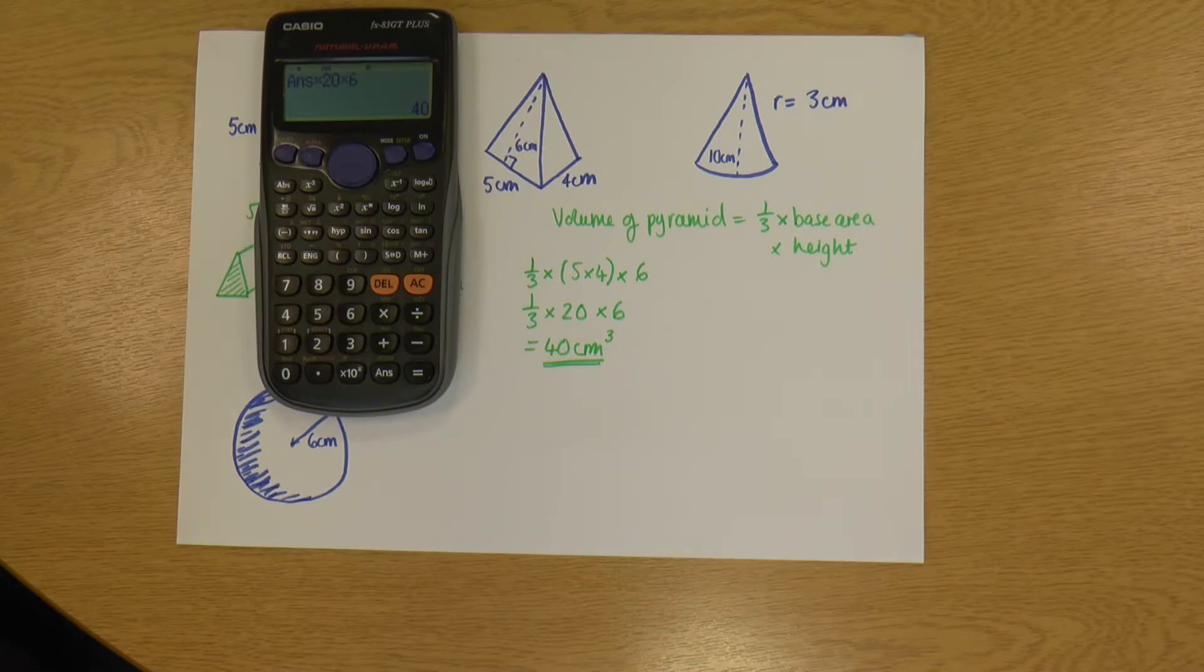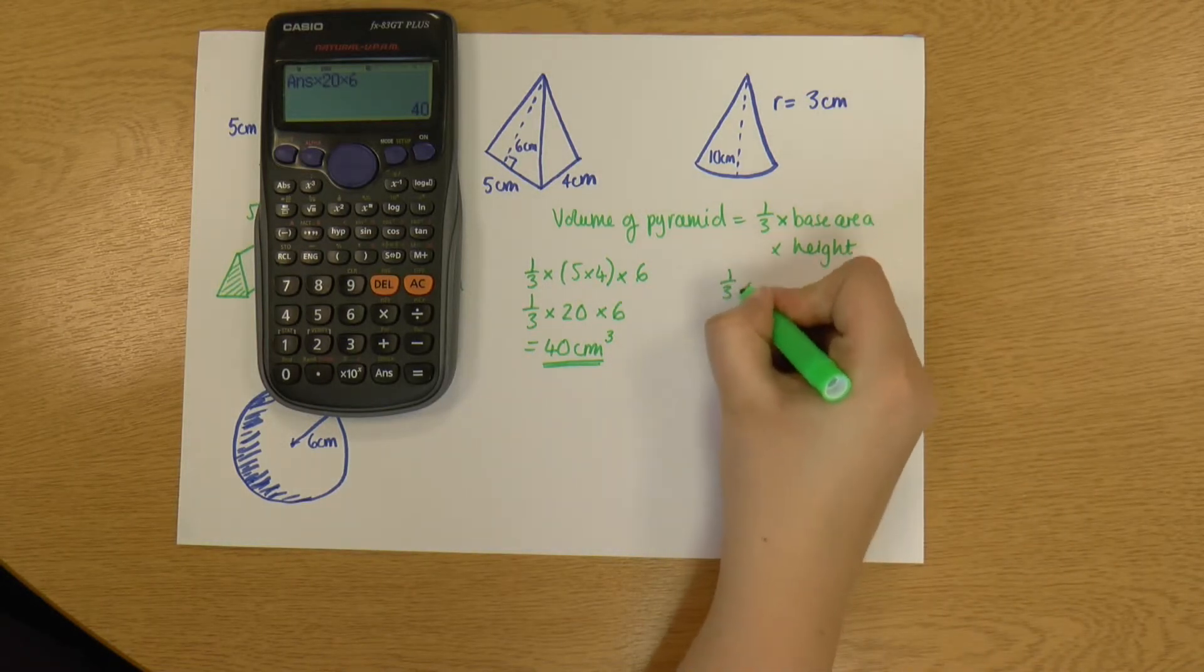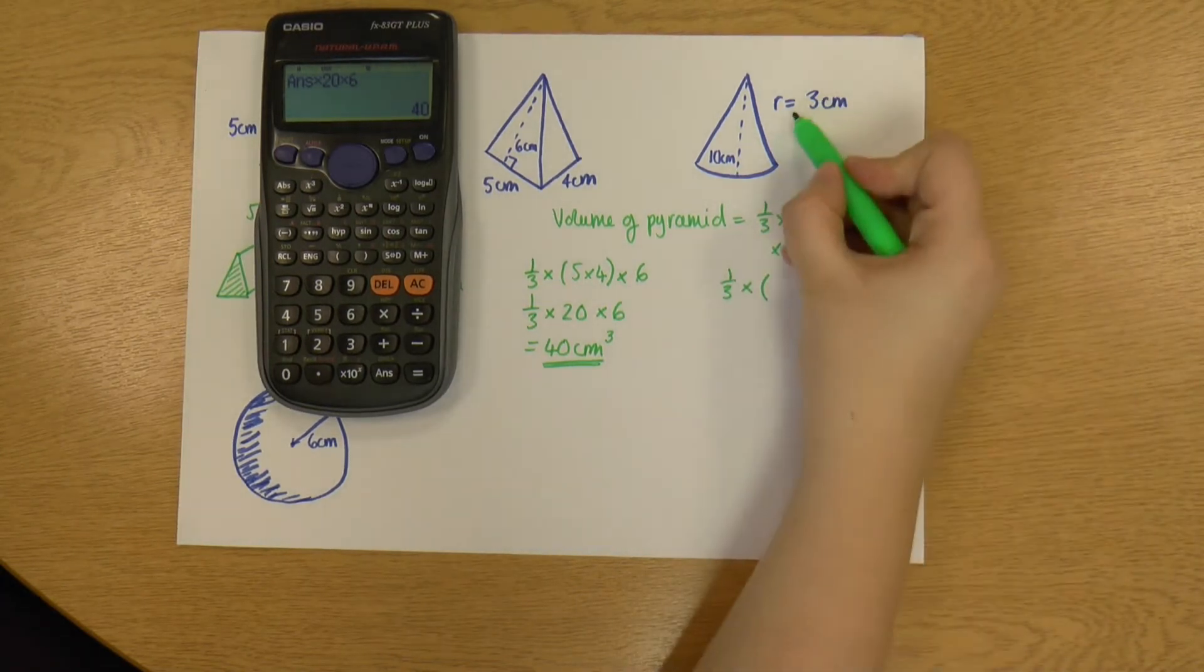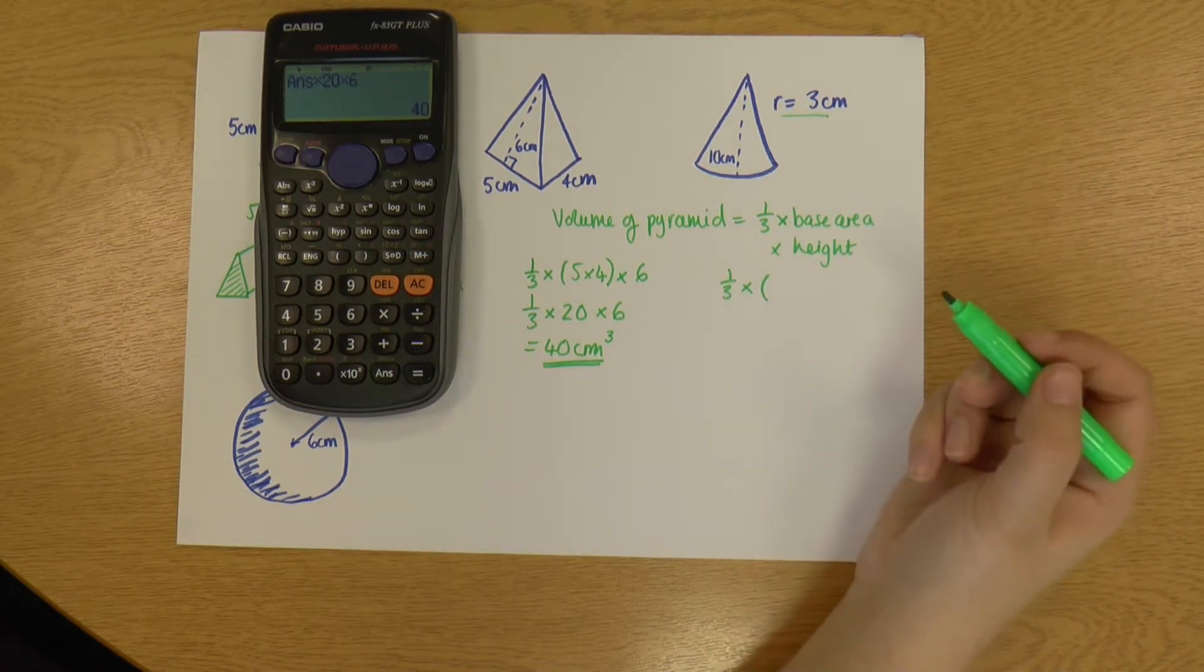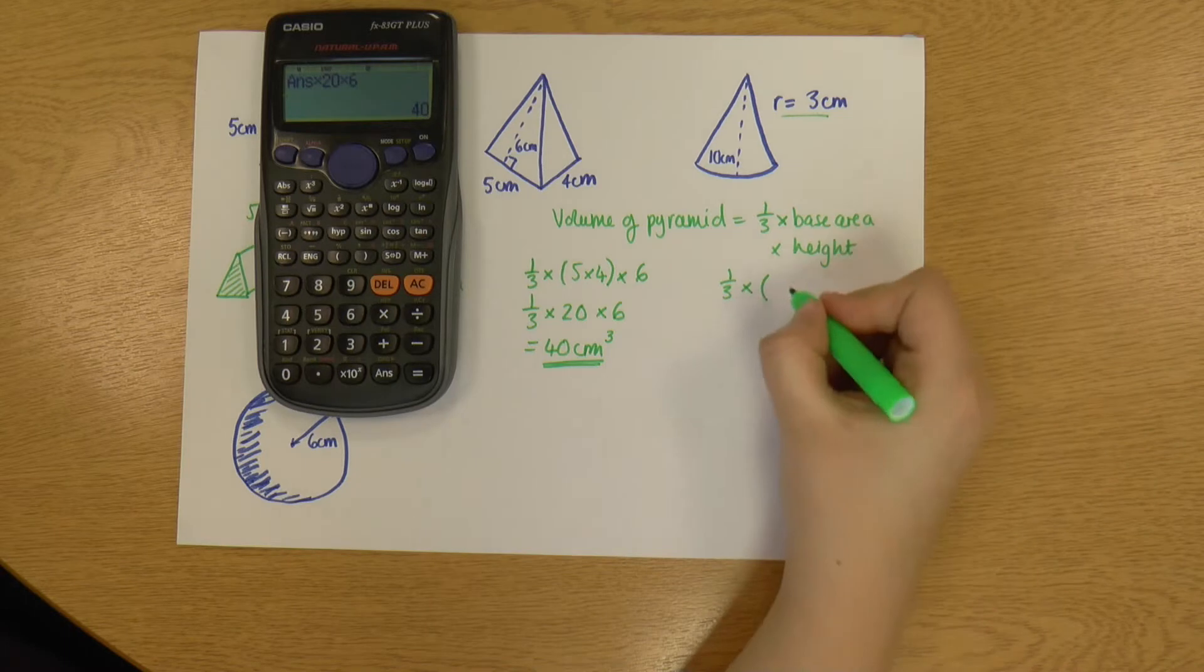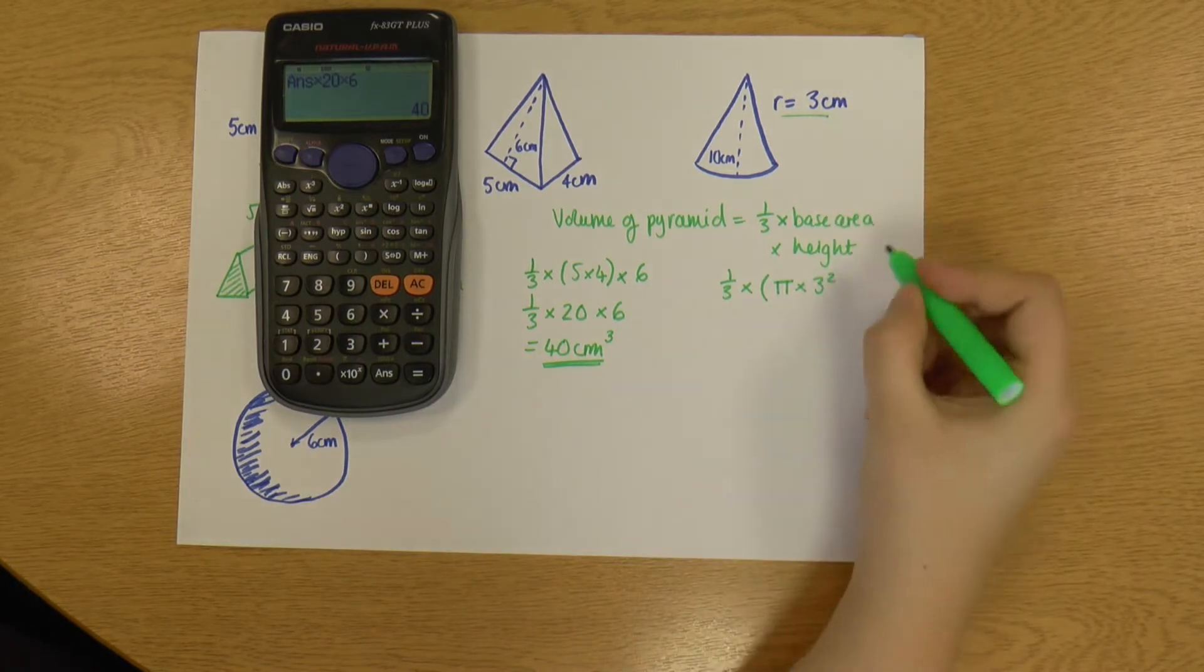Now let's look at the cone. So we've got a third times the base area. Now the base area of a cone is a circle. We've been given the radius up here, so we can find the area of that circle. So remember that the formula for calculating the area of a circle is pi r squared. So I'm going to do pi times r squared. My r is 3. R squared times my height, which is 10.